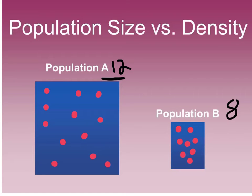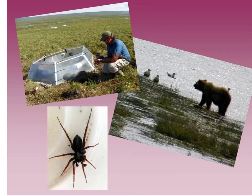However, Population B has a greater population density. Even though it has fewer individuals, those individuals are more tightly packed together, so their density is greater. Size is simply the number of individuals, whereas density is the number of individuals per unit of area. For example, when studying wolf spiders in the tundra, the population density was around 2.5 spiders per square meter. For something like bears, you'd be looking at per square mile or per square kilometer.